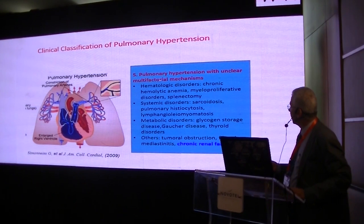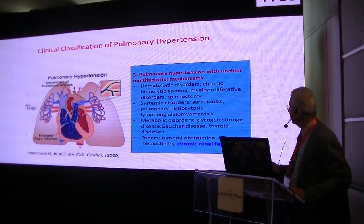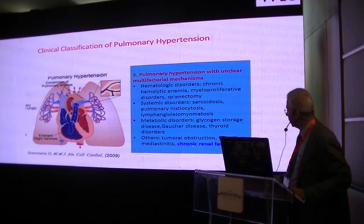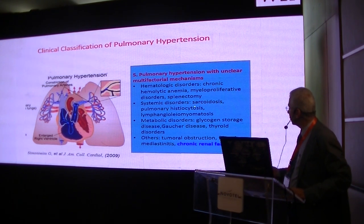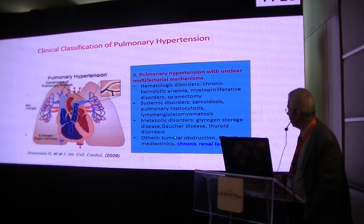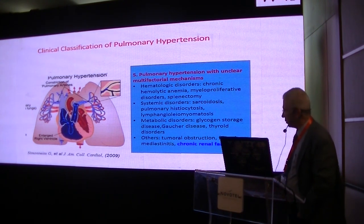The fifth group is pulmonary hypertension with unclear multifactorial mechanisms. Among these is chronic kidney disease or chronic renal failure at different stages, either on or without dialysis. Other disorders include hematologic disorders, systemic disorders like sarcoidosis, metabolic disorders, lung glycogen storage disease, or tumoral obstruction.